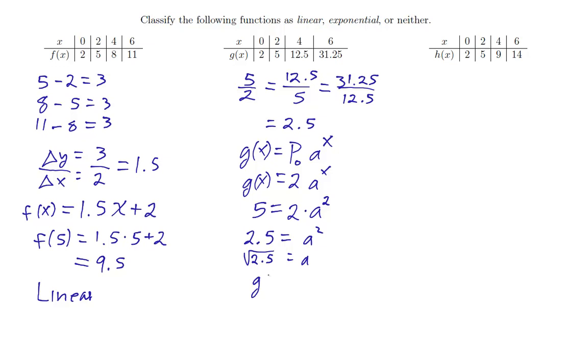And now we have a formula for g of x. g of x is the exponential function 2 times the square root of 2.5 to the x. If you want to write that slightly differently, you could also write that as 2 times 2.5 to the x over 2. Because 2.5 to the 1 half is another way of writing the square root of 2.5. Notice this would also allow us to find extra values for our table like g of 5. g of 5 would be 2 times 2.5 to the 5 halves. Which you could just leave like that or plug into a calculator if you wanted a decimal approximation.